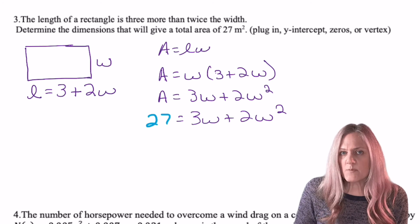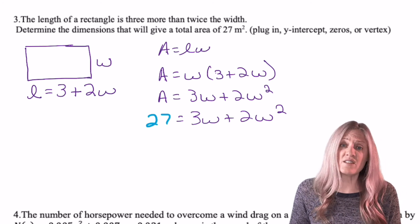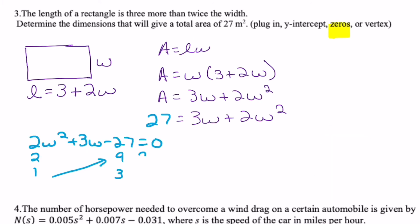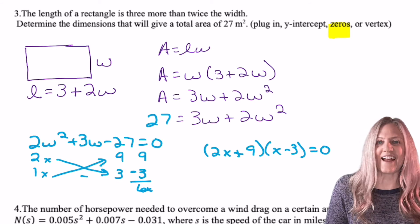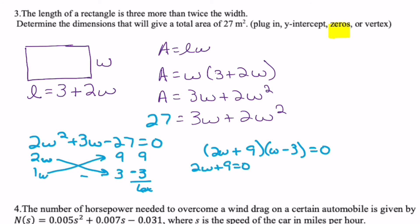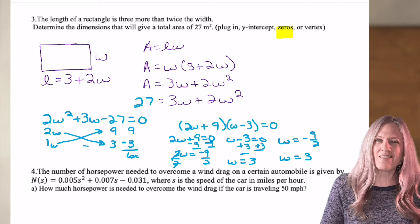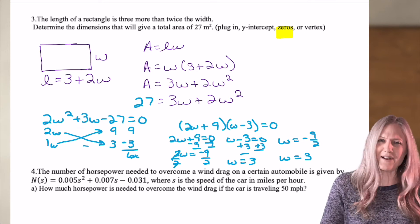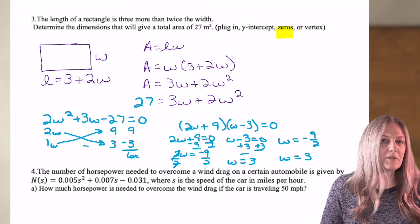So the only thing that seems reasonable at this point is to go ahead and solve for the zeros. So I'm going to subtract the 27 and see if I can factor it. We lucked out. This one factors. Now zero product property and solve for the two values of w. The two values are negative 9 halves and 3. But think about it. We're talking about the length of the side of a rectangle. A negative value makes no sense. So the answer must be w equals 3.